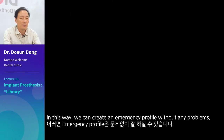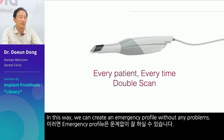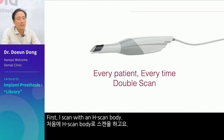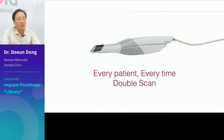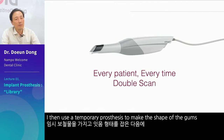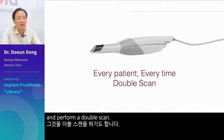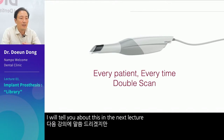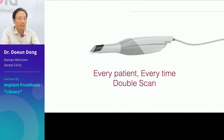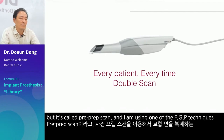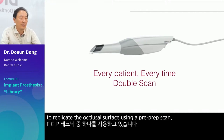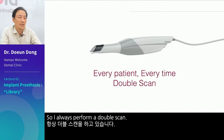In this way, we can create an emergency profile without any problems. I tend to double scan all of my patients. First, I scan with an H-scan body. I then use a temporary prosthesis to make the shape of the gums and perform a double scan. It's called pre-prep scan, and I am using one of the FGP techniques to replicate the occlusal surface using a pre-prep scan. I always perform a double scan.